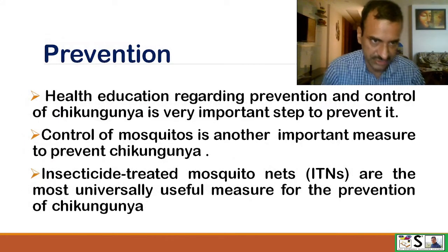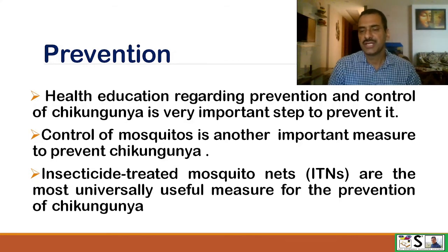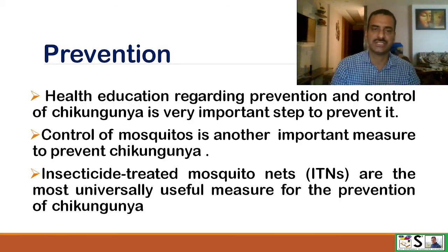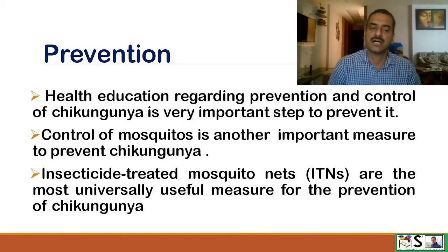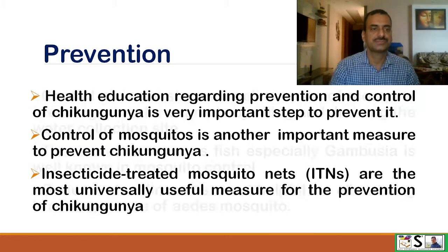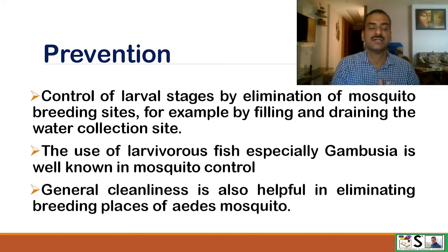How can we prevent this disease? Like dengue and malaria, we can prevent Chikungunya through health education regarding prevention and control. This is a very important step in prevention of Chikungunya or any other mosquito-borne disease. Control of mosquitoes is a very important issue. Insecticide-treated mosquito nets are the most universally useful measure for prevention. Control of larvae by elimination of mosquito breeding sites, for example by filling up and draining water collections, is also key.